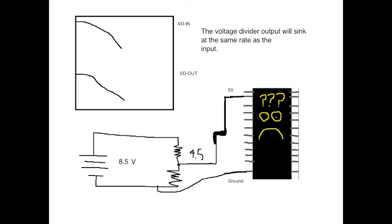Essentially, the output of the voltage divider will always sink at the same rate as the input voltage. So, as soon as the battery voltage starts to sink by even the smallest amount, you'll have the output sink by that very same amount.